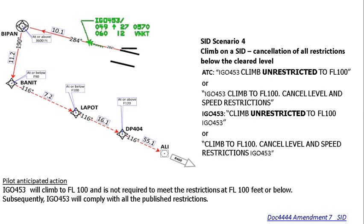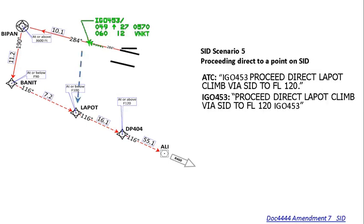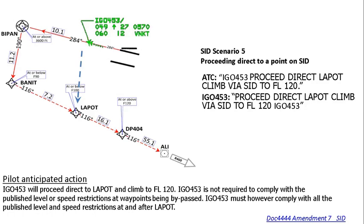After departure from the runway, the aircraft is routing via BIPAN, BANNET, LAPAUT, Delta Papa 404, then Alpha Lima India, and thereafter joining Romeo 460. ATC says 'IFly 453, proceed direct to LAPAUT, climb by SID to flight level 120.' Since 'climb by SID' is specified, charted restrictions apply, but as the aircraft is given direct to LAPAUT, it bypasses BIPAN and BANNET. Therefore IFly 453 does not follow the level and speed restrictions of BIPAN and BANNET, but must follow all SID restrictions from LAPAUT onward, including LAPAUT's restriction of at or below flight level 100.